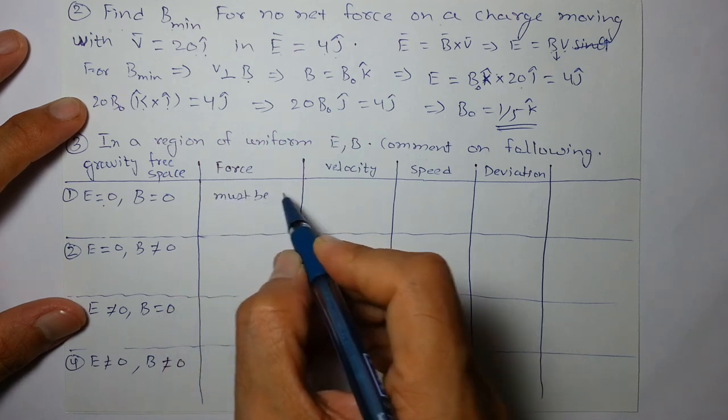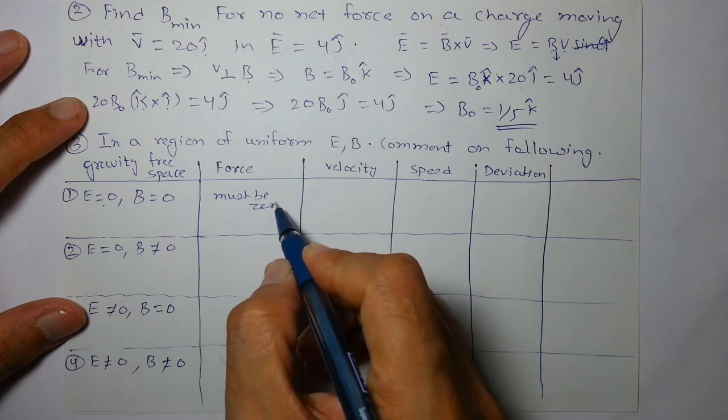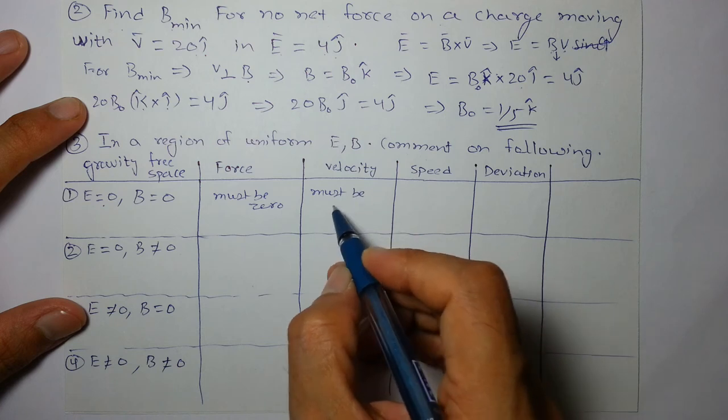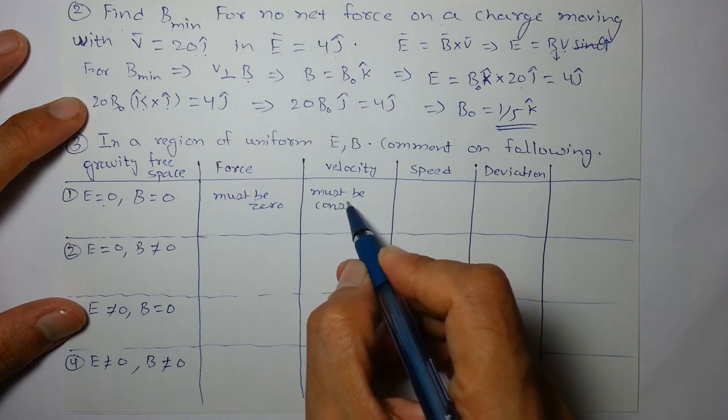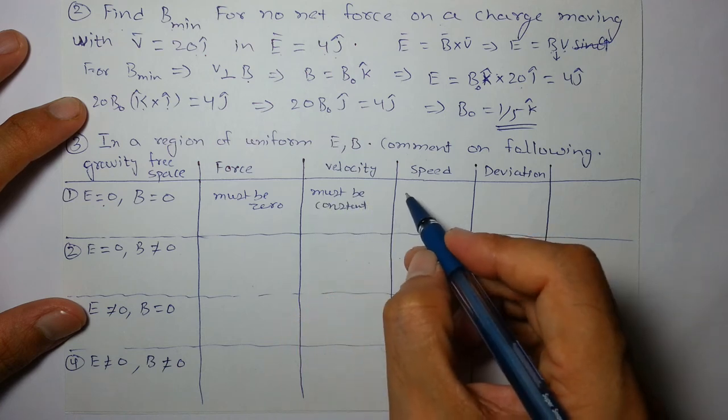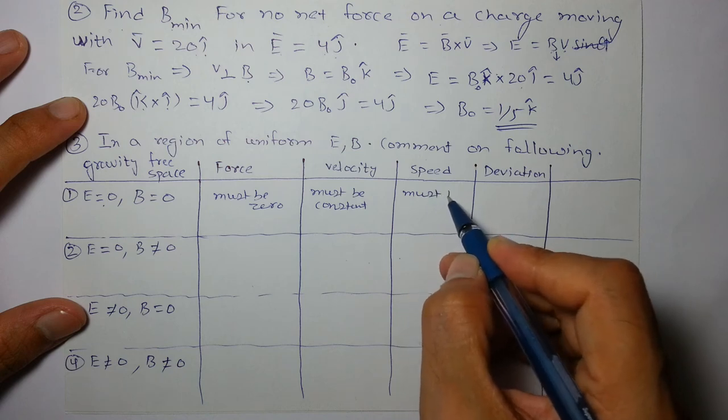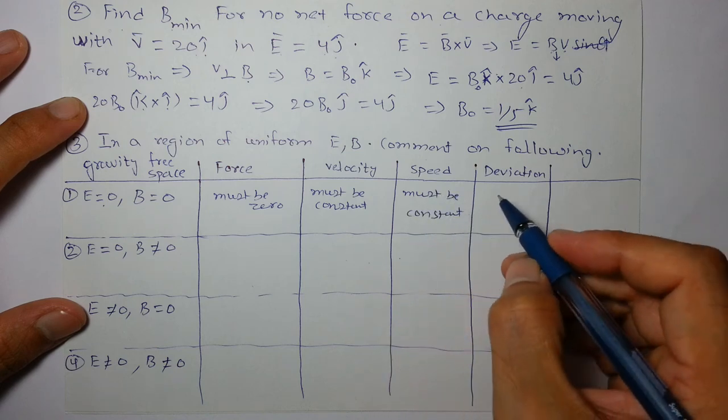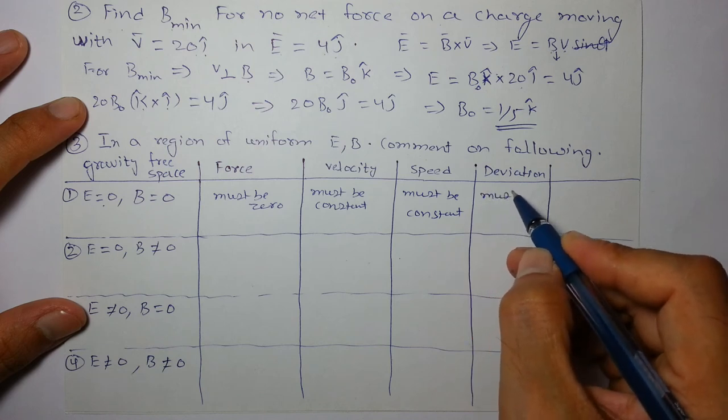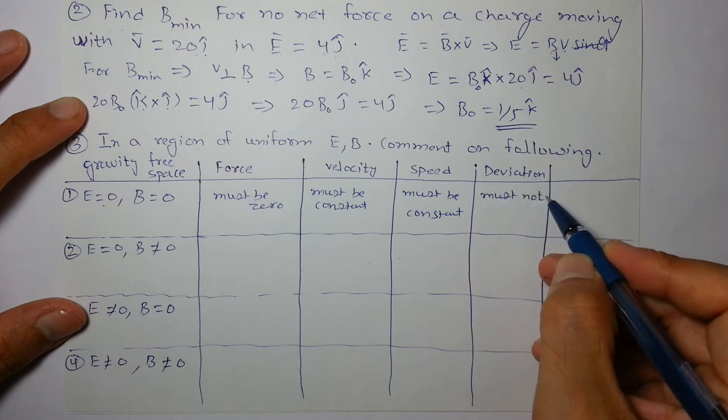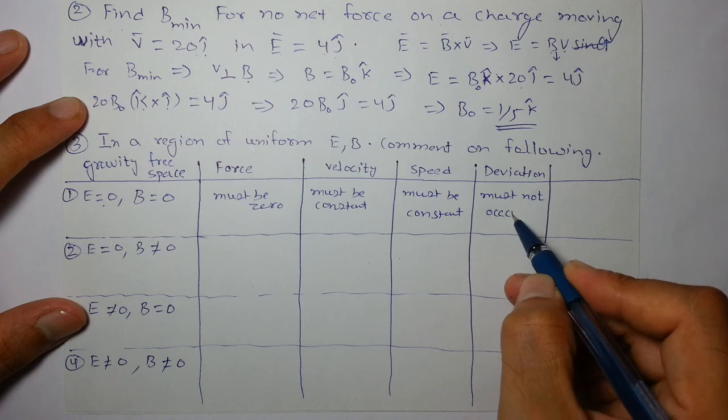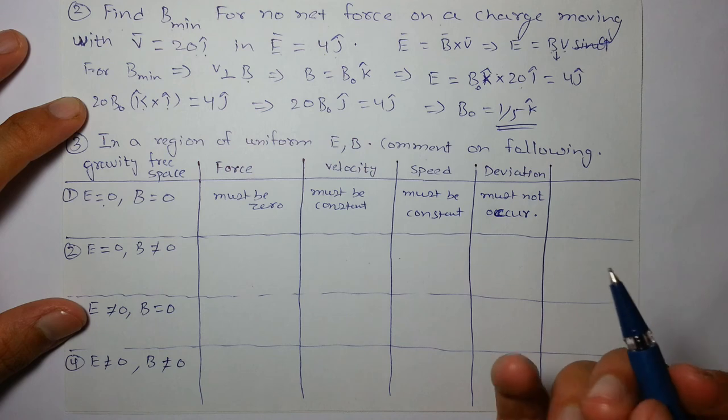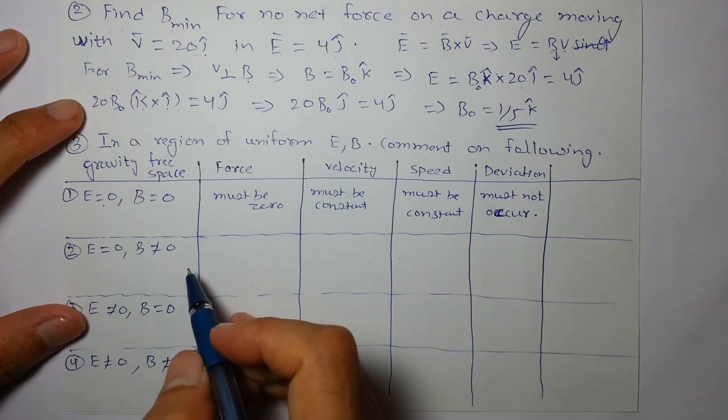Force must be zero. Velocity must be constant, must be constant. Speed must be constant. Because there is no force, deviation must not occur. Deviation must not occur.